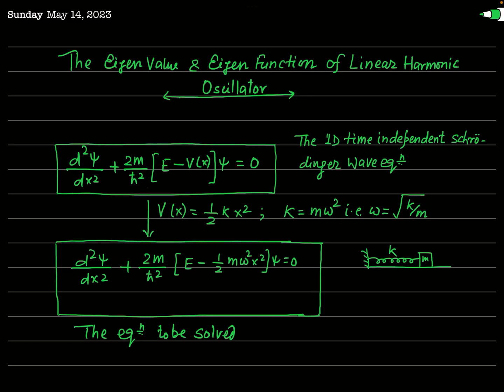Let us start. First, we will consider a linear harmonic oscillator — for example, a spring-mass system as shown in the figure. When this mass is displaced from its equilibrium position, it vibrates or oscillates simple harmonically. If the displacement of the mass from its equilibrium position is x, then the time-independent Schrödinger equation for this system is: d²ψ/dx² + (2m/ℏ²)(E − V(x))ψ = 0, where ψ is the eigenfunction.